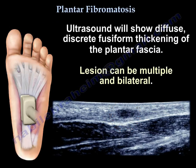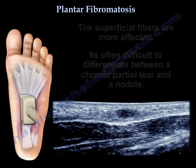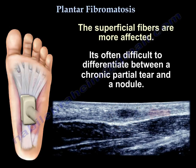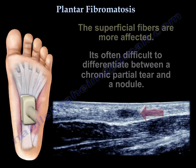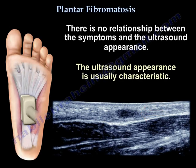Ultrasound will show diffuse discrete fusiform thickening of the plantar fascia; lesions can be multiple and bilateral, with superficial fibers more affected. It is often difficult to differentiate between a chronic partial tear and a nodule. There is no clear relationship between symptoms and ultrasound appearance, though the appearance is usually characteristic.